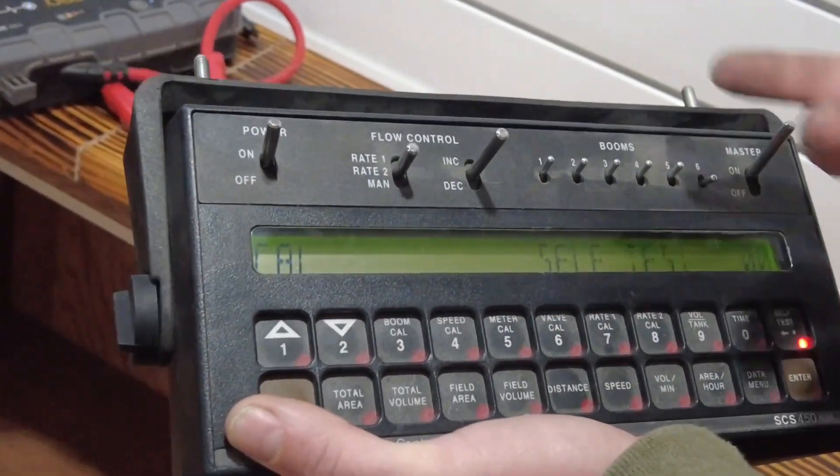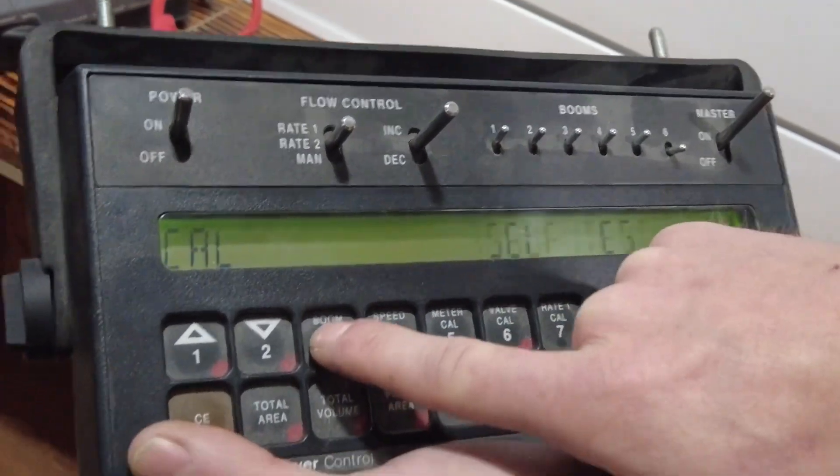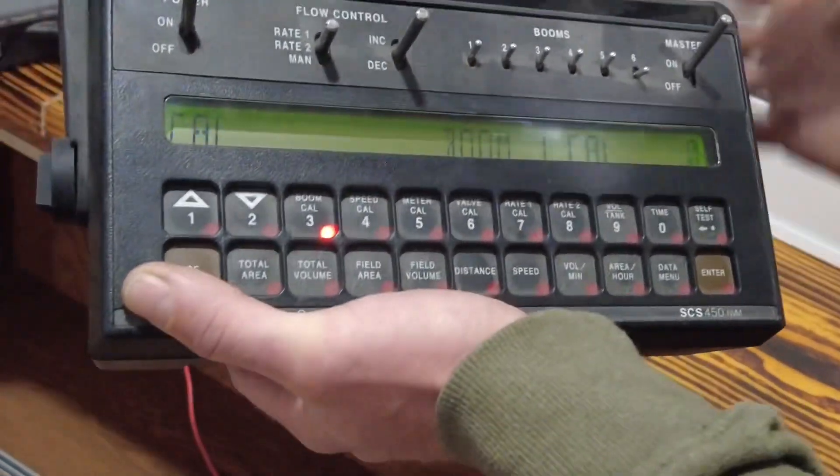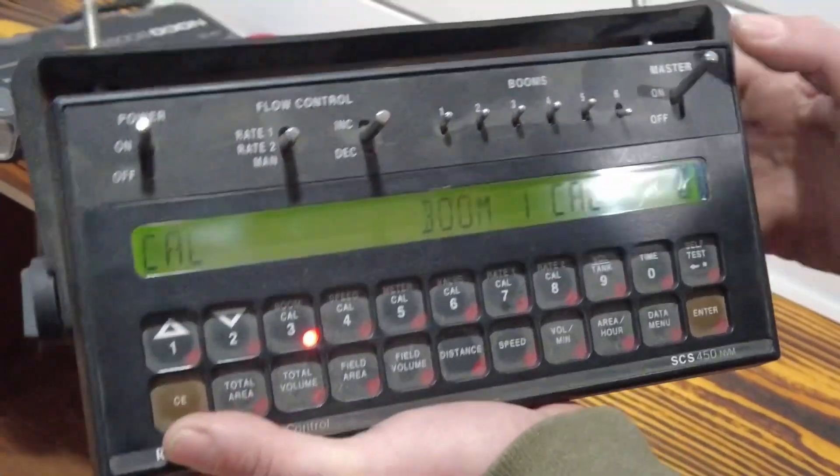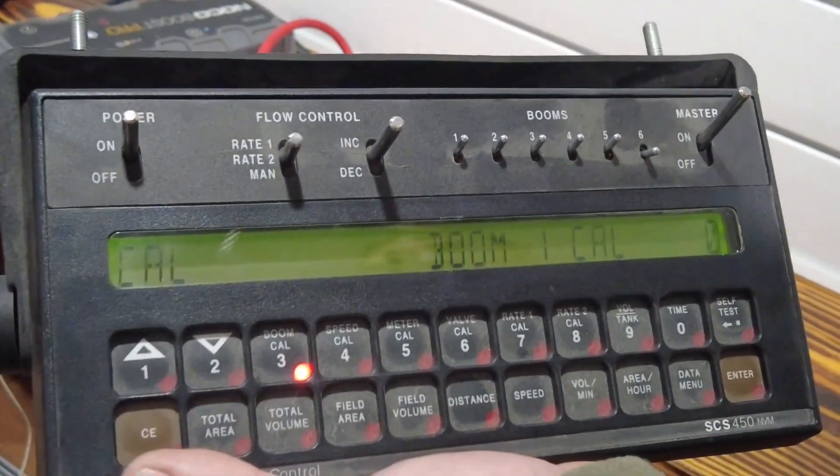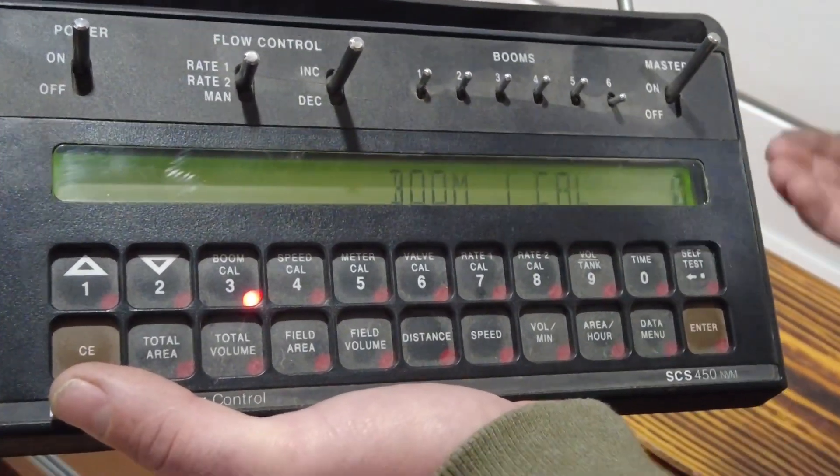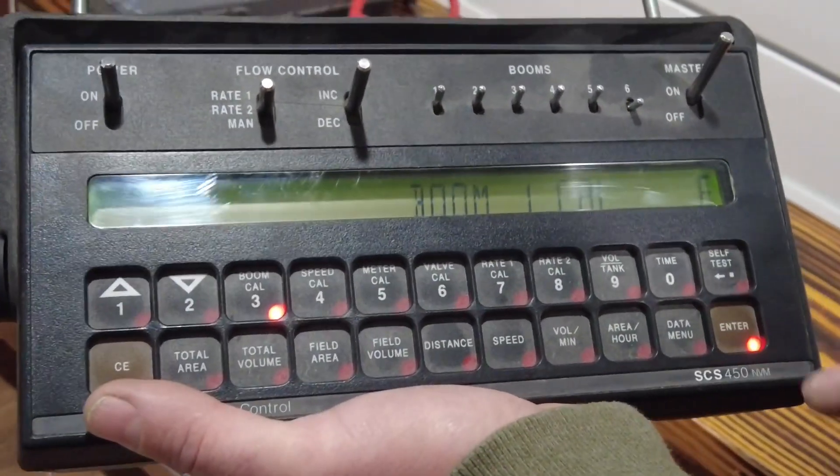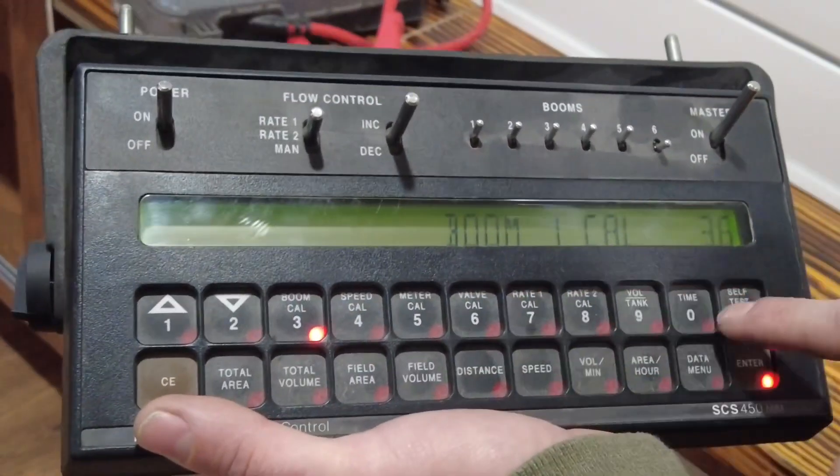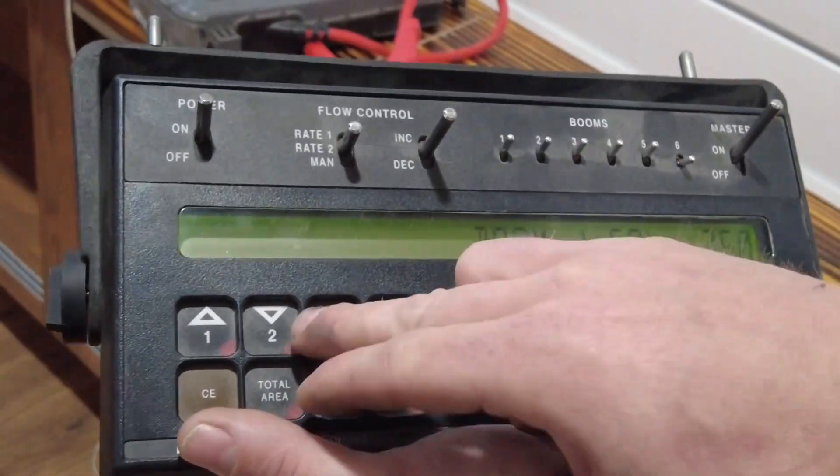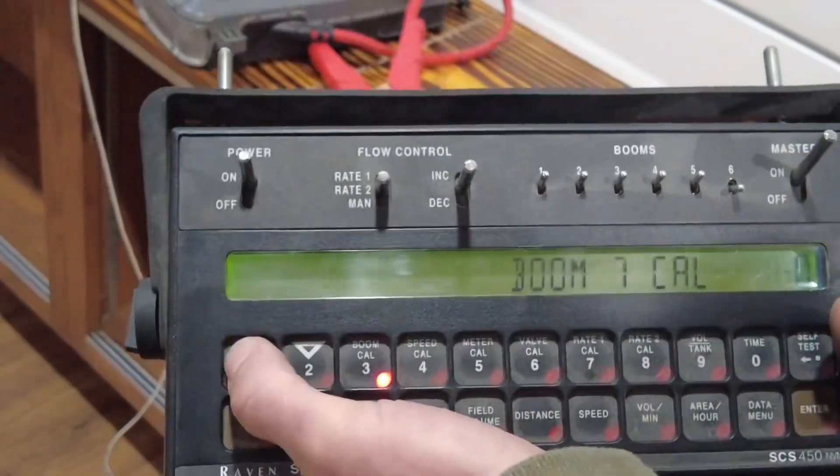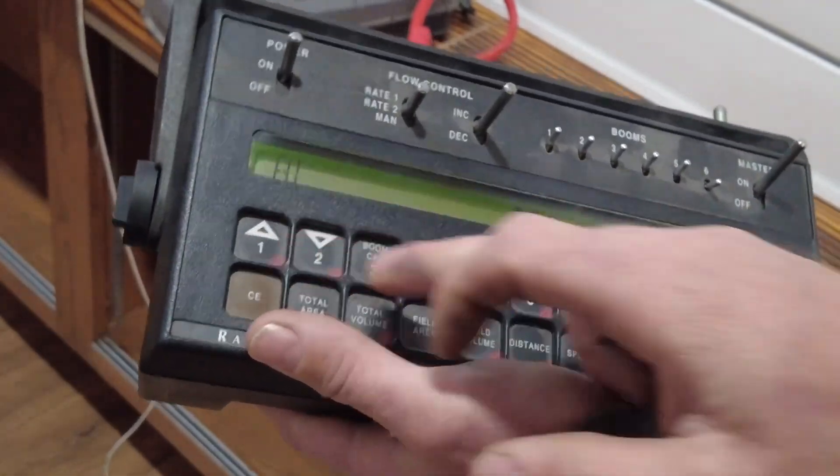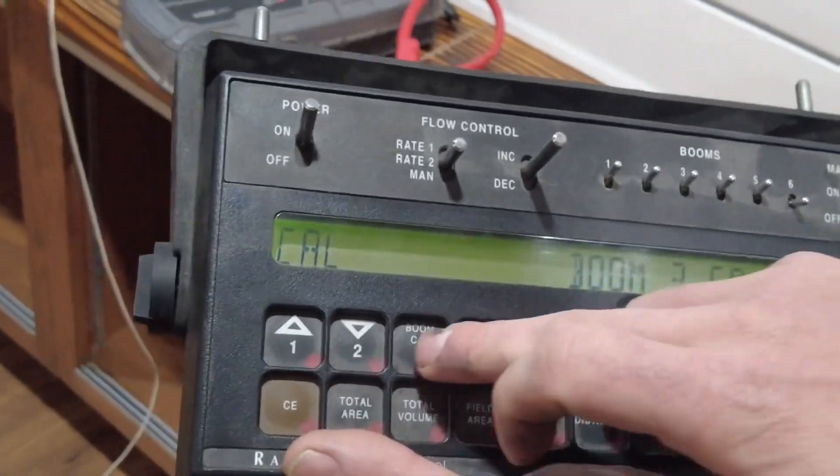Okay, now we start up front here. We're going to start with our boom cal. Boom cal one. Well let's just pretend that I have three booms, three sections, and let's say that we're doing a 90 foot sprayer and each section is 30 feet. So boom cal one is going to be in inches, press enter, three six zero enter. Boom cal one is entered. Boom two, two, enter, three six zero enter. Boom three, enter, three six zero enter. 90 foot sprayer.